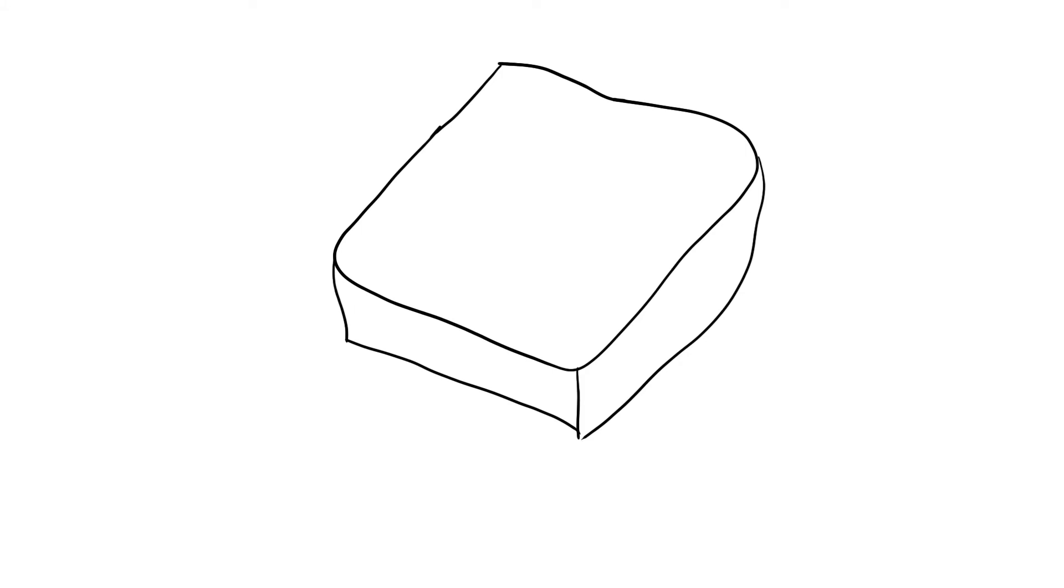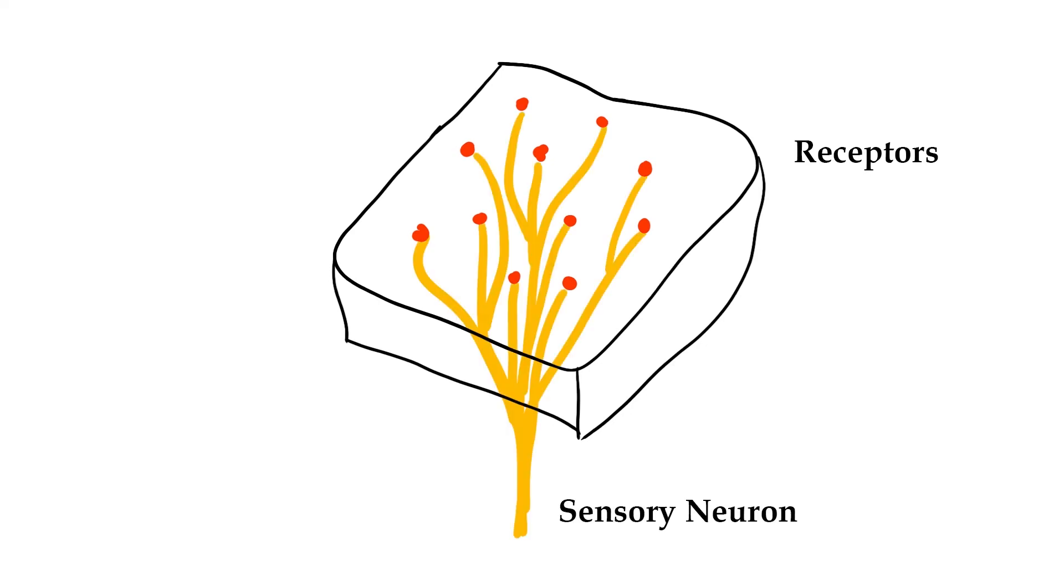Okay, so let's say we take this section of skin here. And in the skin, you're going to find multiple receptors. And all these receptors can feed in to one sensory neuron. This area that the receptors occupy, this is referred to as your receptive field. So this is the part of the skin this one sensory neuron can detect.